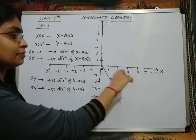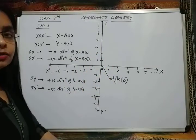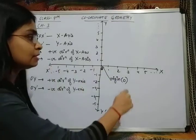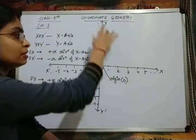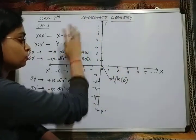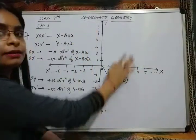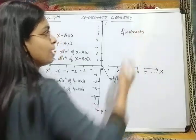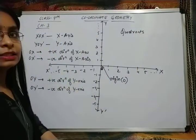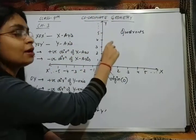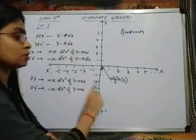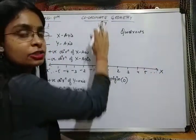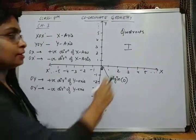These two axes divide the whole two-dimensional plane into four parts. One, two, three, and four. These four parts are known as quadrants. Each part is called a quadrant. The quadrant in which there is a positive direction of x-axis and positive direction of y-axis is taken as the first quadrant.